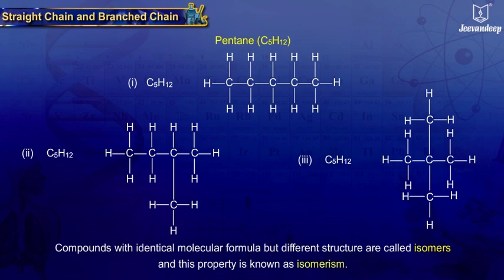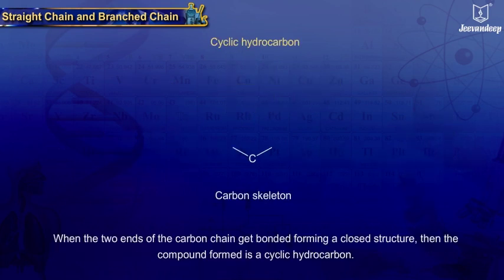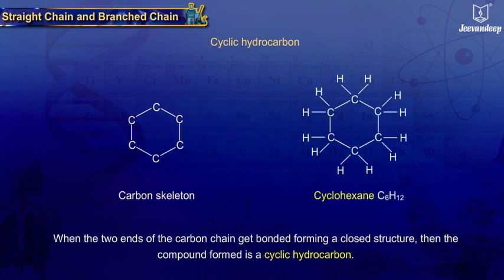Thus, these three structures are isomers. When the two ends of the carbon chain get bonded forming a closed structure, then the compound formed is a cyclic hydrocarbon. For example, cyclohexane C6H12 is a cyclic hydrocarbon.